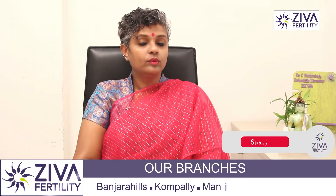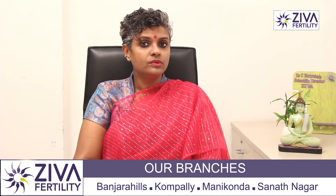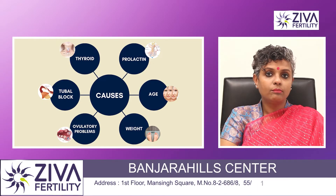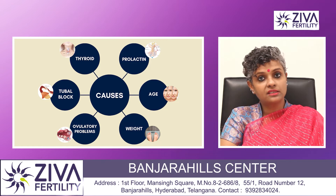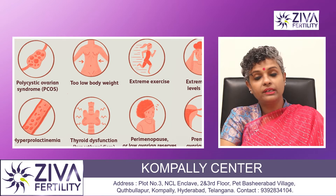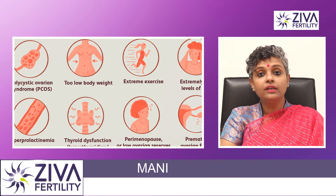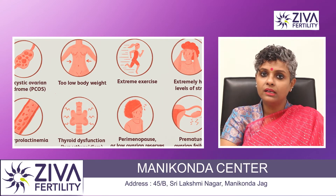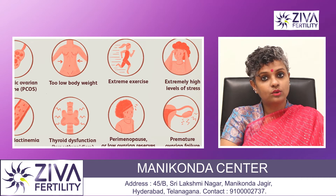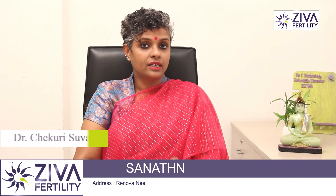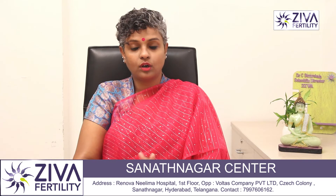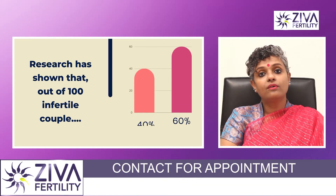Then comes ovulatory problems. Ovulatory problems are also associated with secondary infertility, because as much as you might think that everything is the same — your periods are the same, the bleeding is not very different — there could be some imbalances or disturbances in your ovulation. Definitely that has to be looked into and your doctor will guide you accordingly.